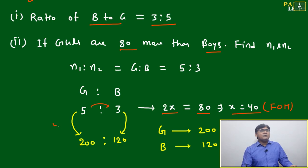...multiply by the same number and you get the required values. If you multiply 5 by 40 and 3 by 40, you get 200 and 120. You can check: the difference is 80 more.